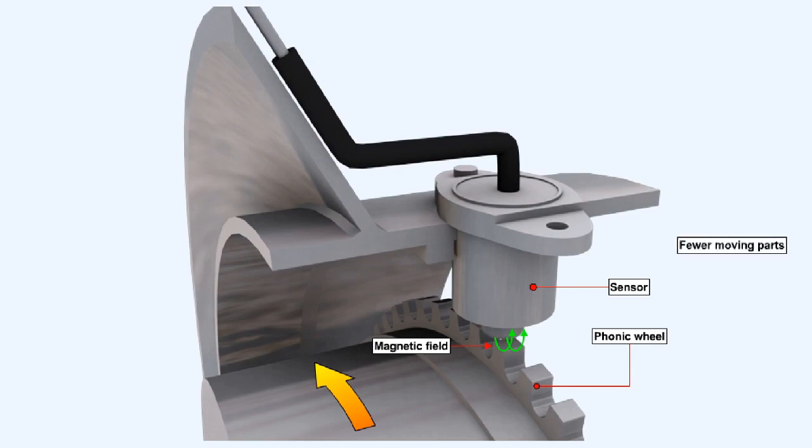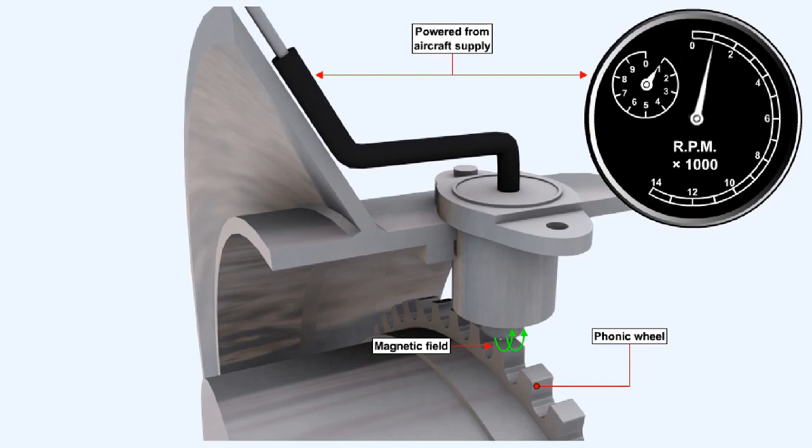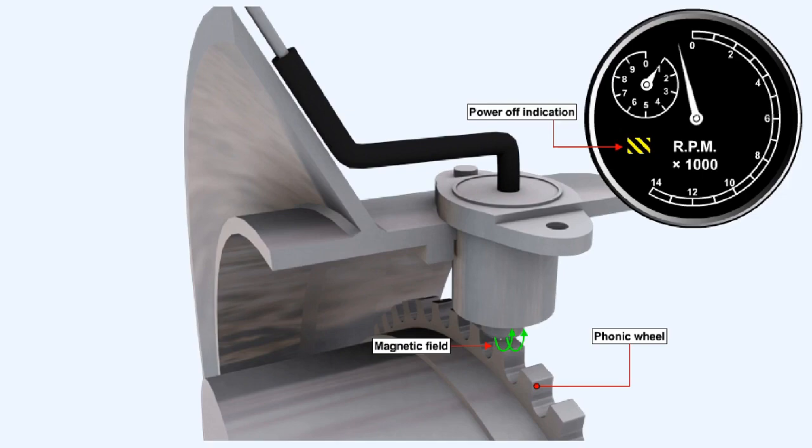The advantage of the speed probe system is twofold. First, the reduction in the number of moving parts required in the engine. And second, that a number of separate electrical outputs additional to those required for speed indications can be provided, for example, automatic power control and flight data acquisition systems. RPM indicators which receive their speed signals directly from speed sensors or via servo-operated systems are powered from the aircraft supply. In the event of either a power supply failure or a signal failure, the needle of the indicator is returned to an off-scale position, and a power-off flag may be displayed.